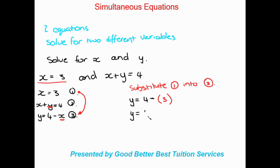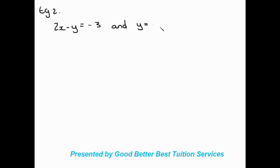So we're left with 4 minus 3, therefore Y equals 1. Moving on to the second example, they give us 2X minus Y equals negative 3, and Y equals negative 2.